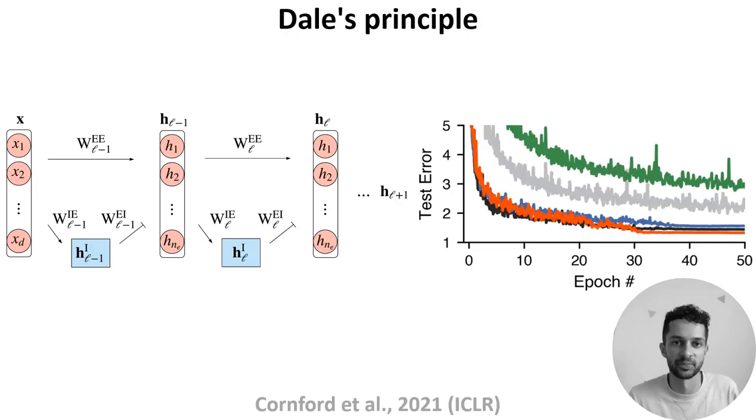This is known as Dale's principle and sets up an interesting contrast between biological and artificial neural networks. Again, biological neurons will release the same set of neurotransmitters for all of their partners, but in artificial neural networks, single units have both positive and negative output weights, so their activation sends different signals to different units. So is this a limitation of biology or an advantage?